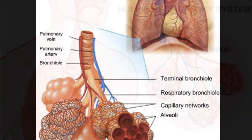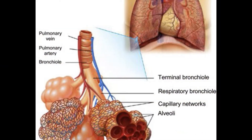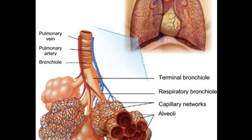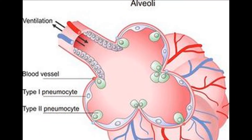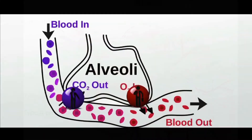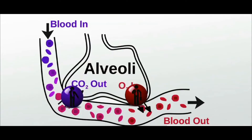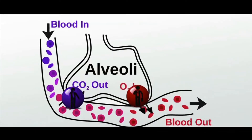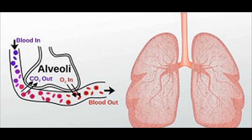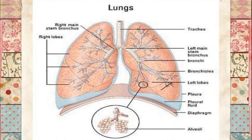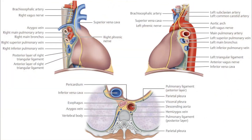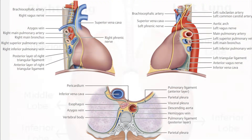Alveoli. The bronchioles end in blind air sacs called alveoli. The wall of the alveolus is very thin. Oxygen and carbon dioxide easily diffuse in and out of the body across the tissue of the alveoli. Lungs. The lungs are a pair of spongy sacs present in the chest cavity, protected by the ribcage and the pleural membranes.